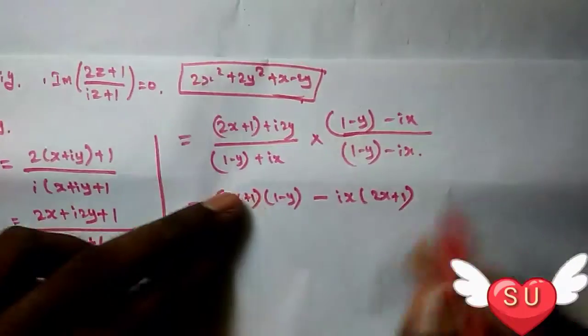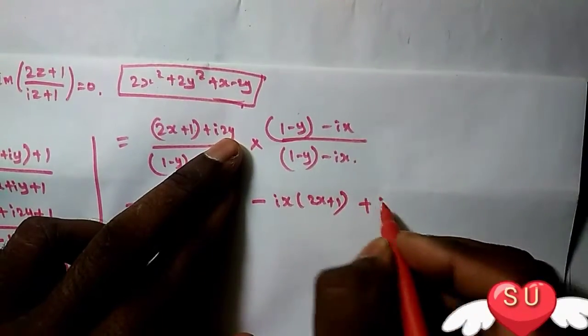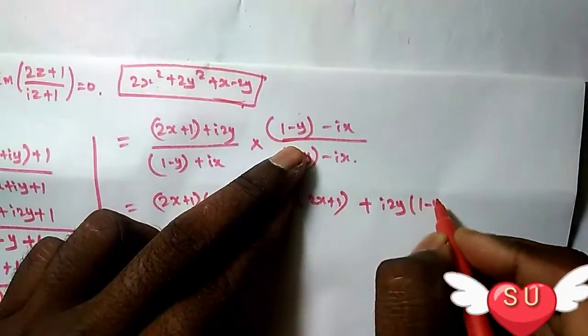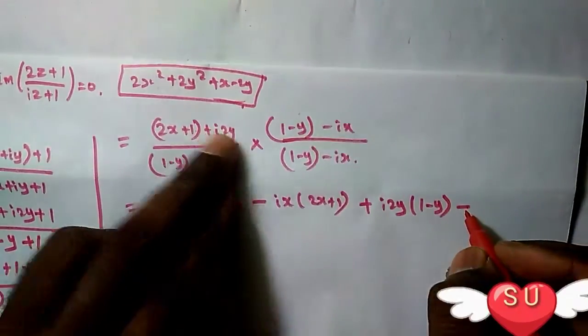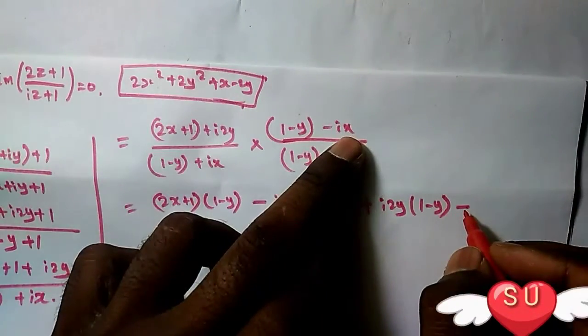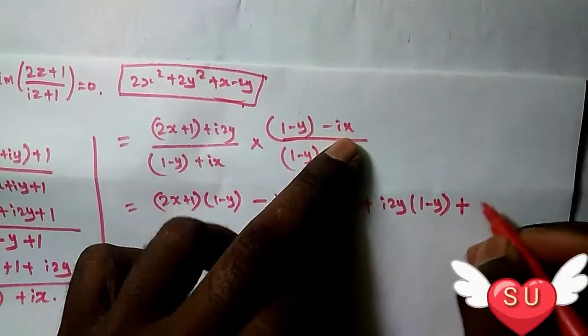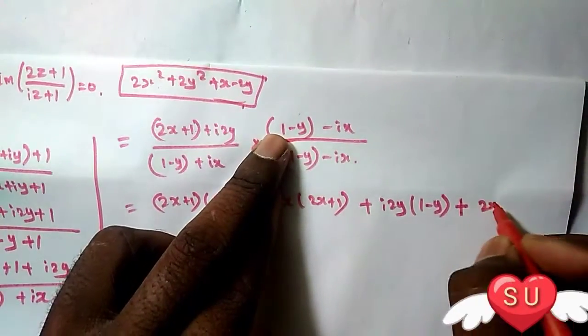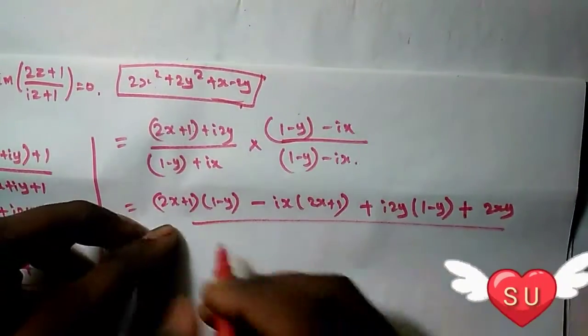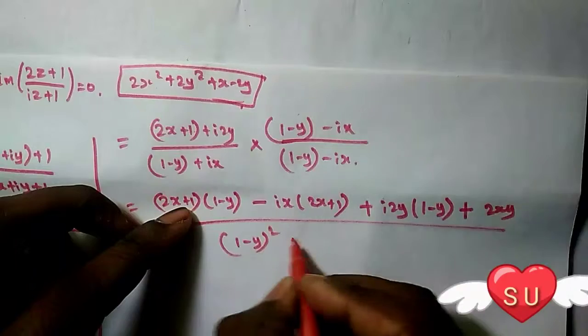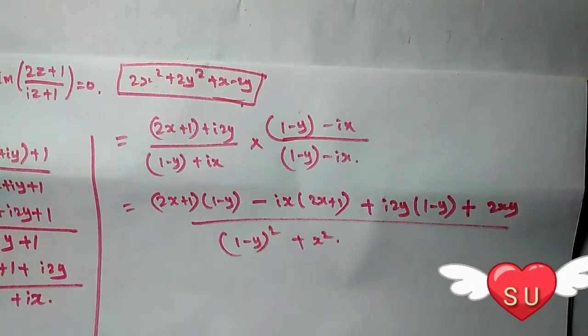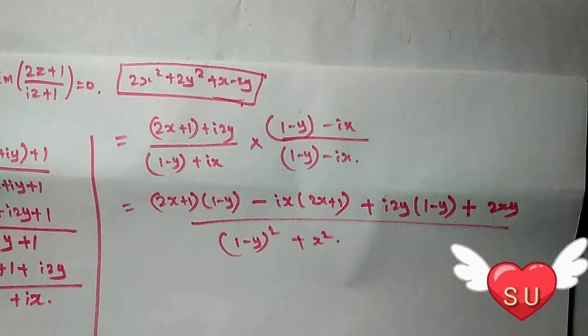Expanding the numerator: (2x+1)(1-y) - ix(2x+1) + i·2y(1-y) + i²·x·2y. Since i² = -1, the last term becomes +2xy. The denominator is (1-y)² + x².